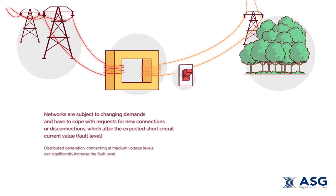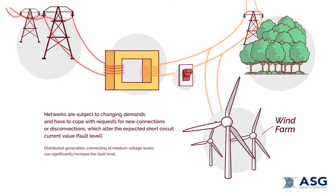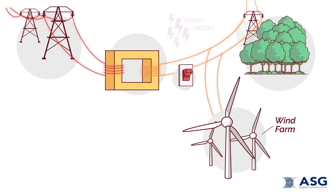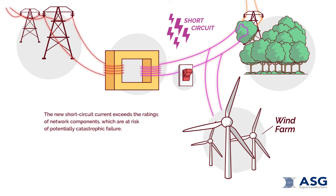Networks are subject to changing demands and their operators have to cope with requests for new connections or disconnections, which alter the expected short circuit current value, referred to as a fault level. Distributed generation connected to medium voltage circuits can significantly increase the fault level.